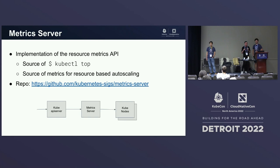Metrics server is what we call an aggregated API server — a kind of third-party API server through which the kube API server sends autoscaling requests. Metrics server itself grabs CPU usage or memory usage from the kubelet and returns that information to the kube API server. So if an application like kubectl tries to get CPU usage info, it goes through the API server and then metrics server.